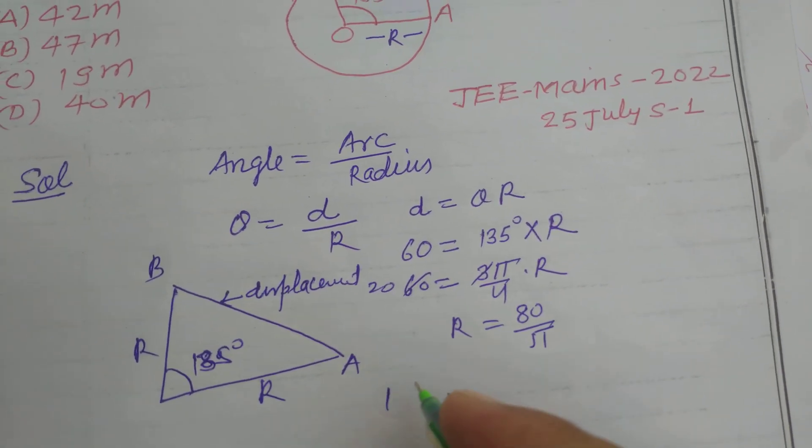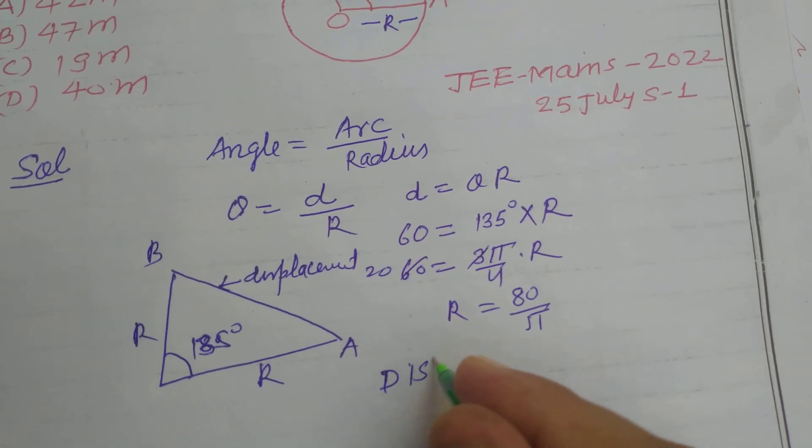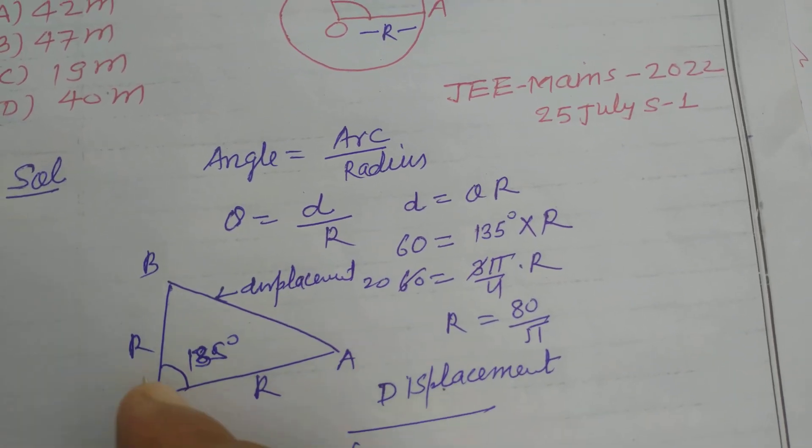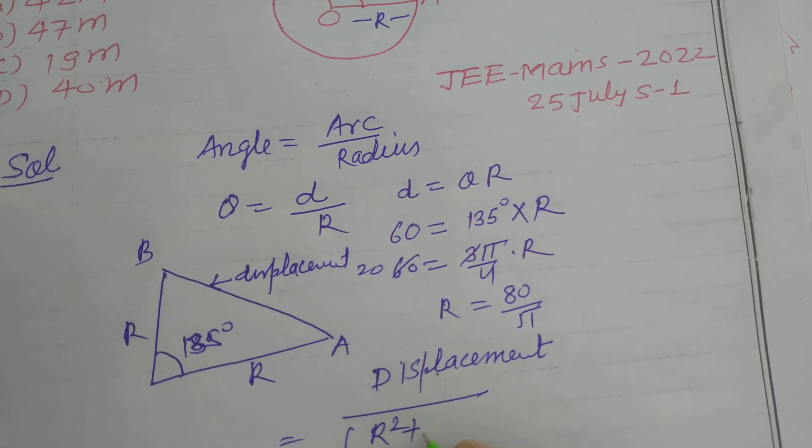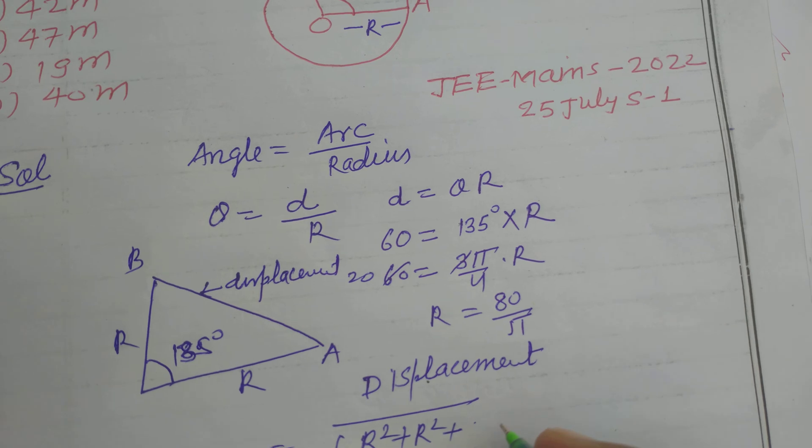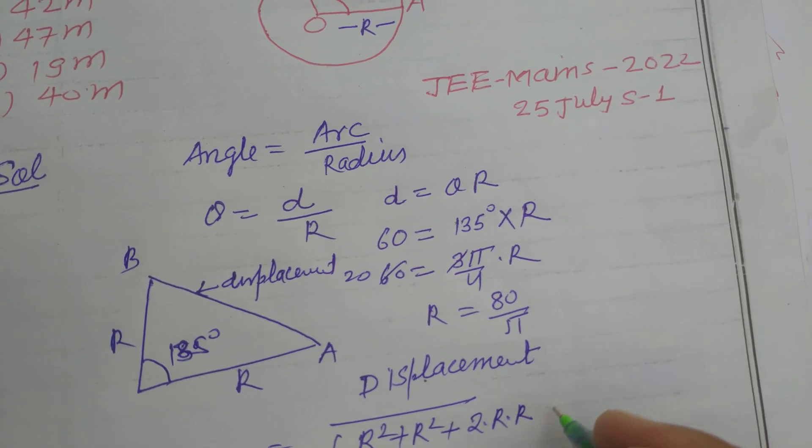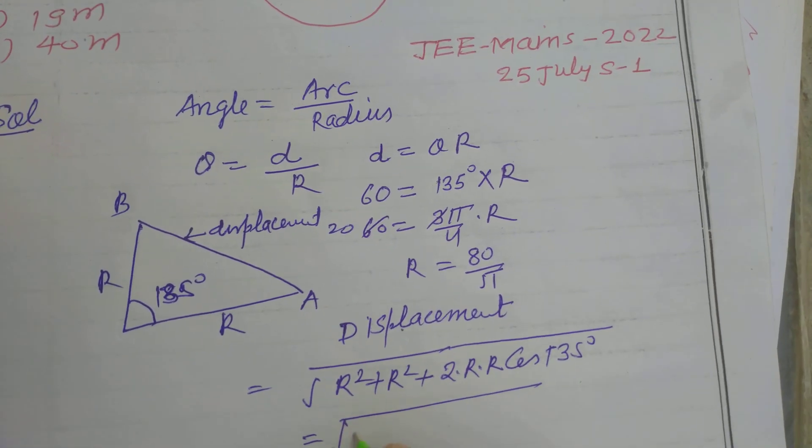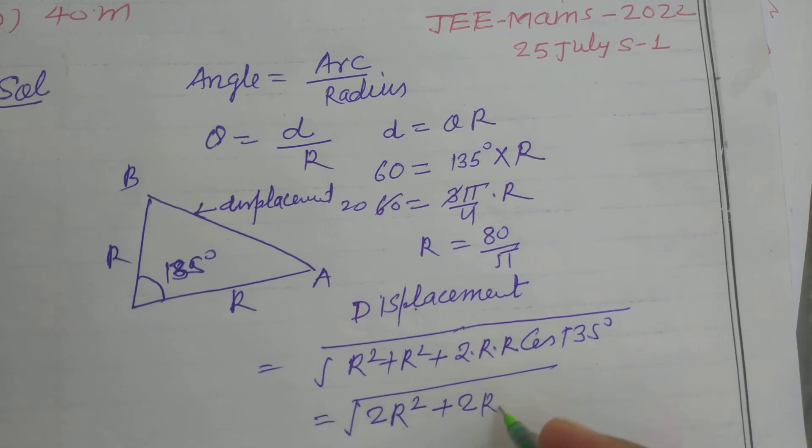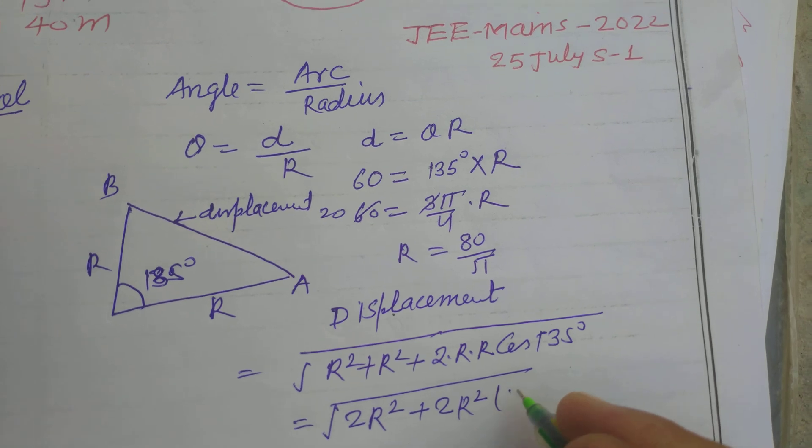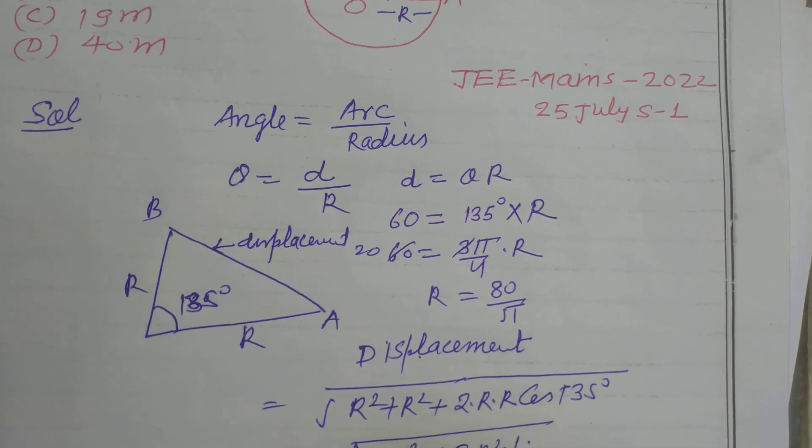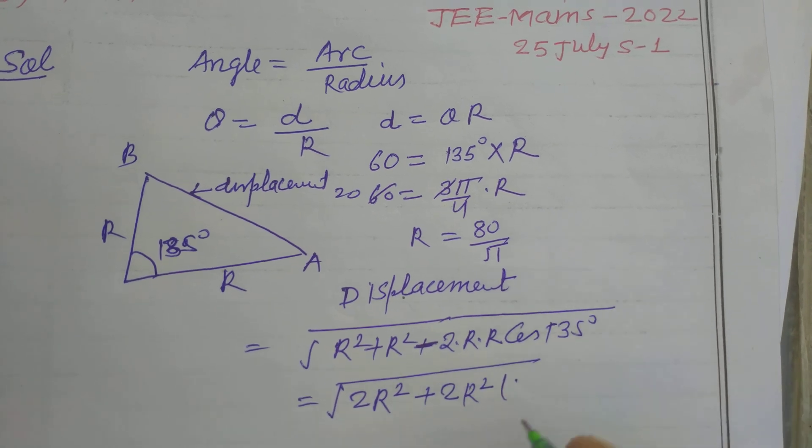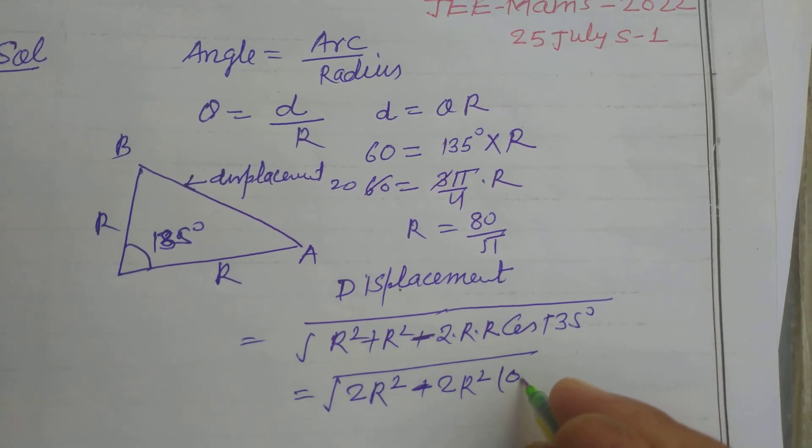So displacement is equal to under root R square plus R square plus 2 times R into R cos 135. By using A square plus B square plus 2AB cos theta. So this is 2 R square plus 2 R square cos 135, which is 2 R square minus 1.4 R square.